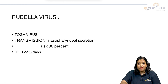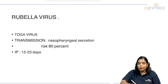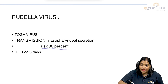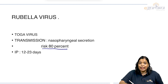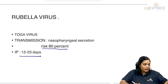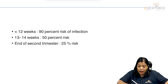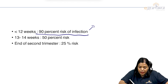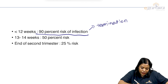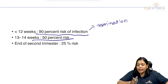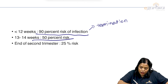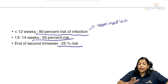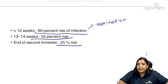Rubella virus is a type of toga virus and is the most teratogenic. Transmission is mainly by nasopharyngeal secretions with an 80% risk. Incubation period is 12 to 23 days. Risk by trimester: less than 12 weeks — 90% risk of infection, so offer termination; 13 to 14 weeks — 50% risk; end of second trimester — 25% risk.